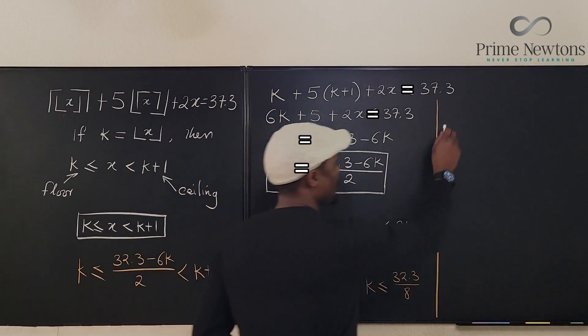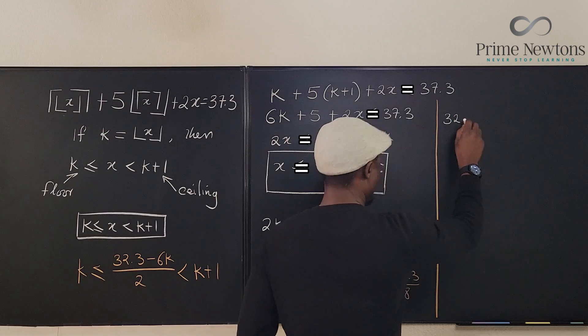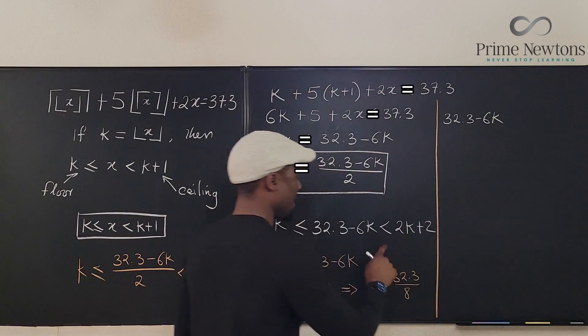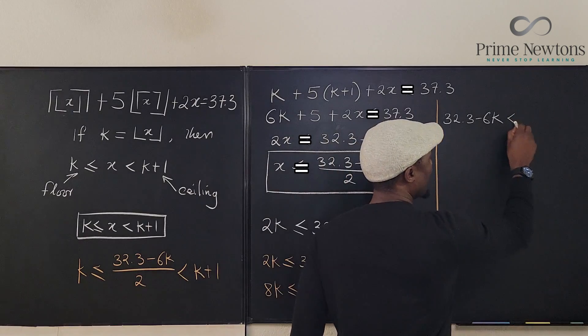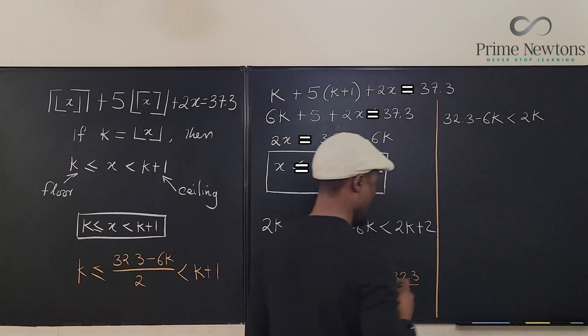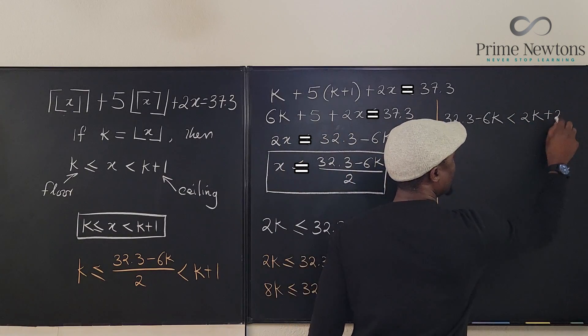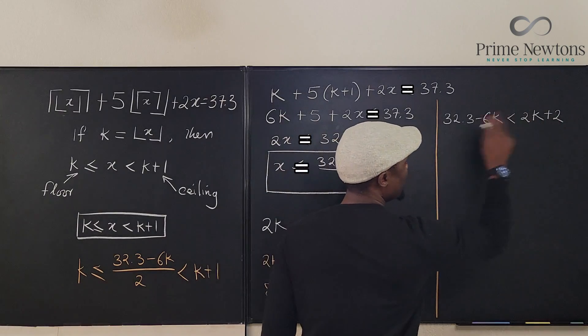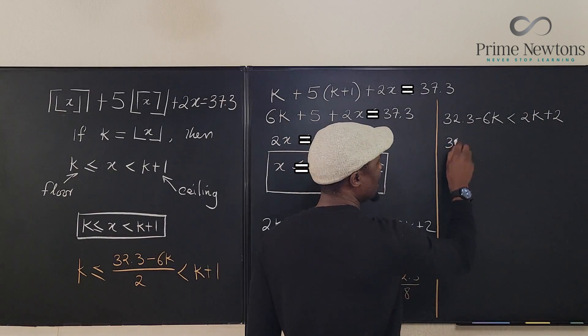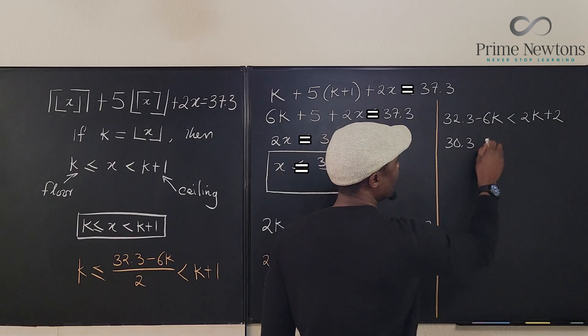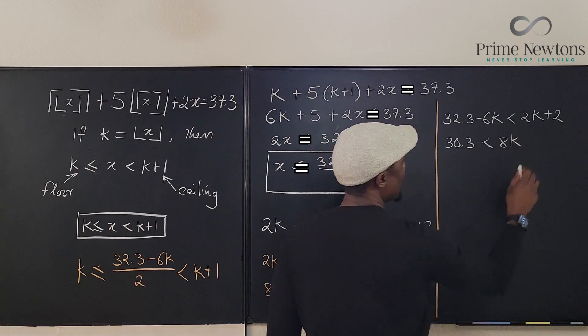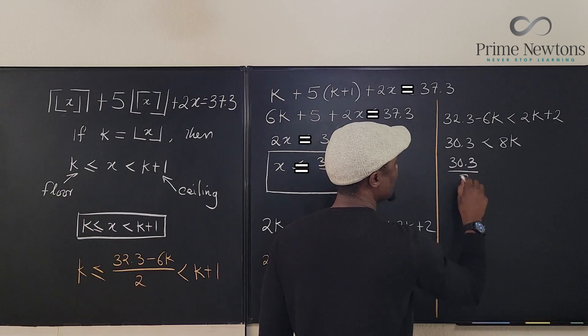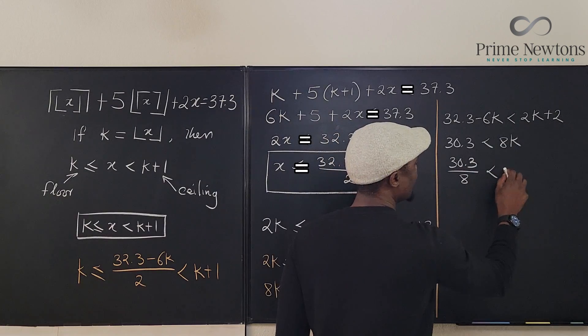Let's go now and deal with this other side of the inequality. Let's draw this line. So here we can also say that 32.3 minus 6k is strictly less than 2k plus 2.